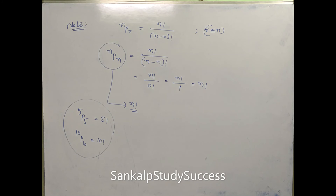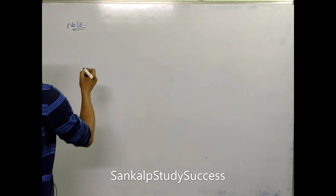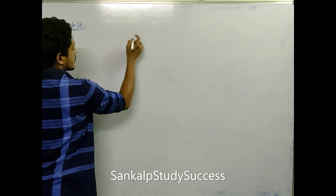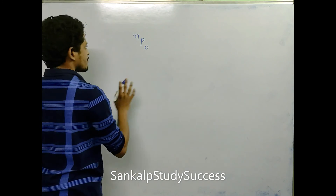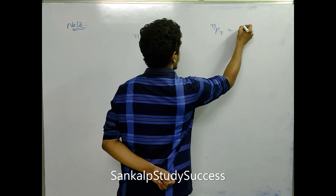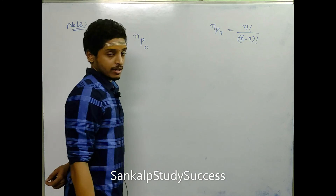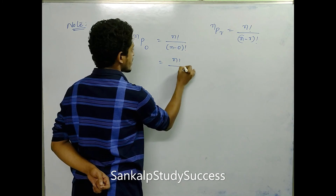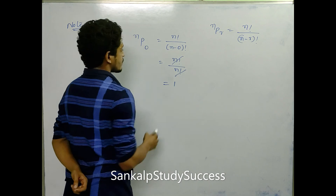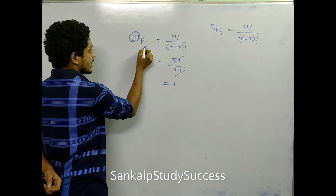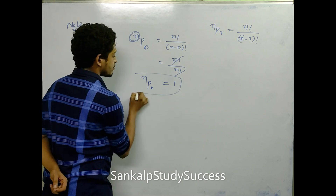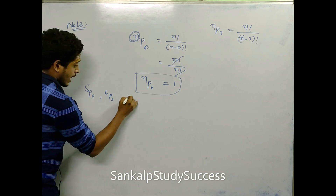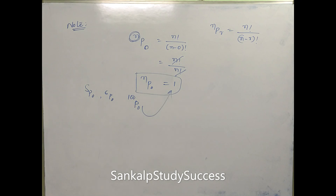Next, nP0 equals n factorial divided by n minus 0 factorial equals n factorial divided by n factorial equals 1. This is a very very important note. I hope you enjoyed this lecture. Please do like, comment and share. Don't forget to subscribe. Thank you so much for watching. See you in the next session. Bye.